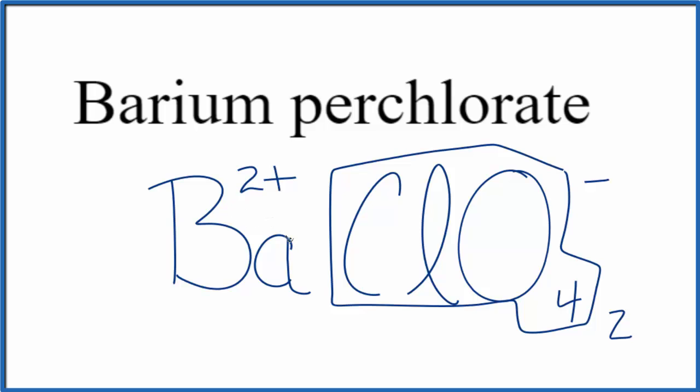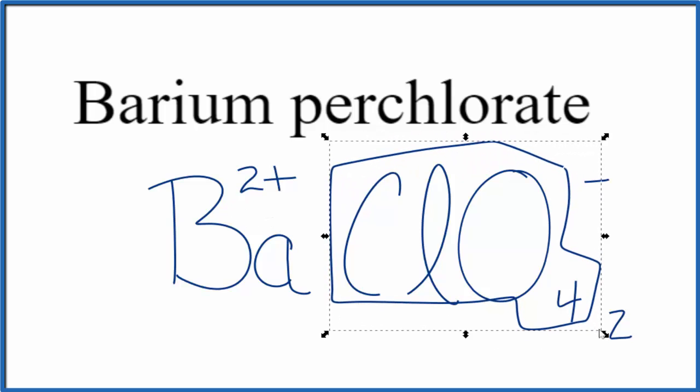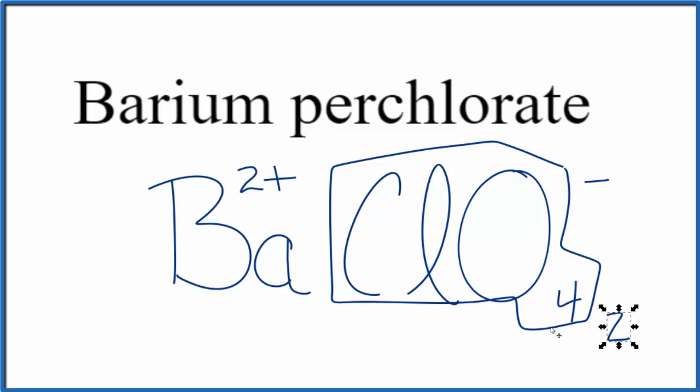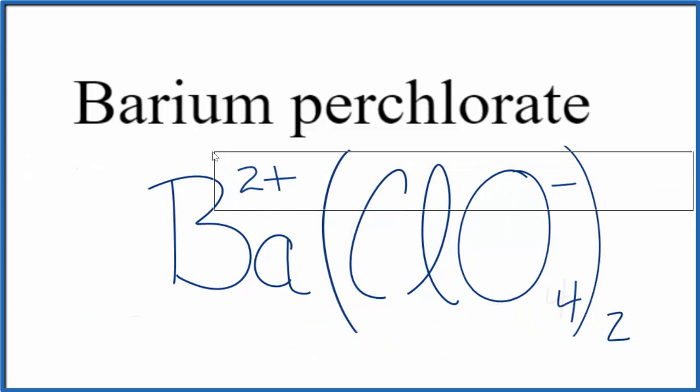Gives us a net charge of 0. So let's replace this with parentheses, since we have 2 of the perchlorate ions. Get rid of these symbols here. And this is the formula for barium perchlorate, B A C L O 4 2.